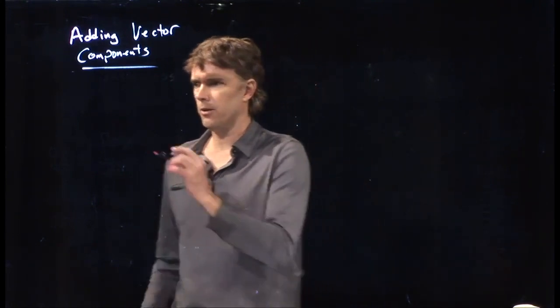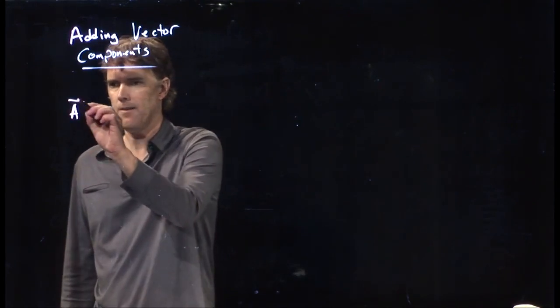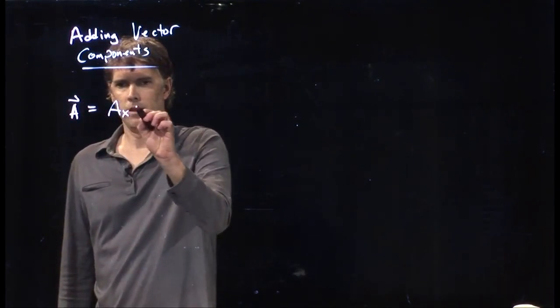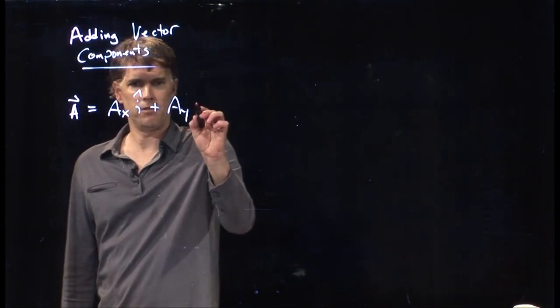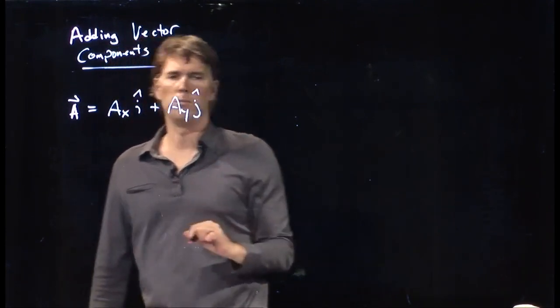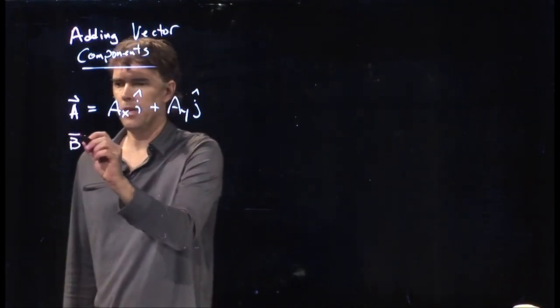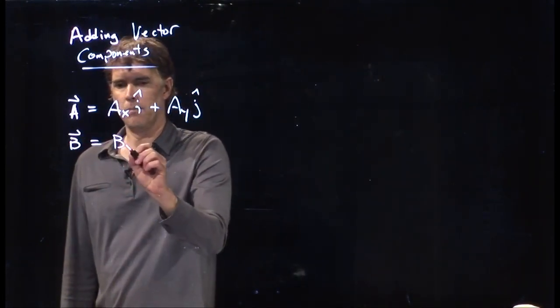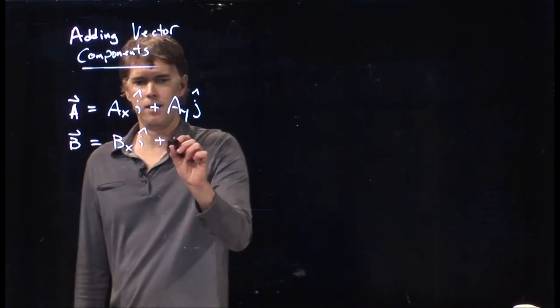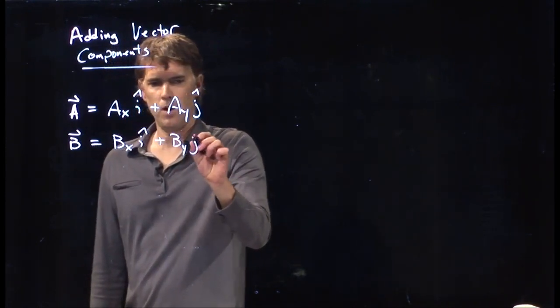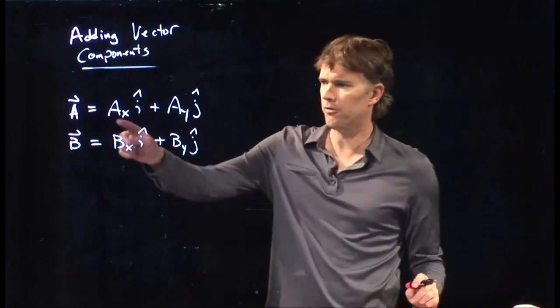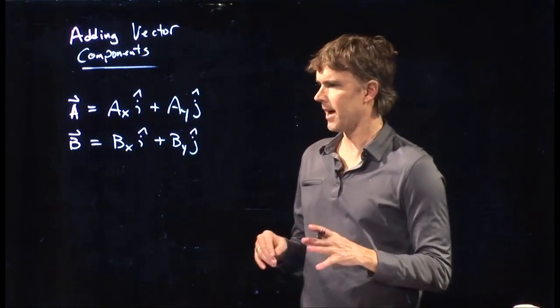So let's say we have the following. Let's say we have vector A, we can write that as Ax i-hat plus Ay j-hat. And now we have vector B, which is Bx i-hat plus By j-hat. Those are some numbers that we would put in there, but we don't have those numbers yet.